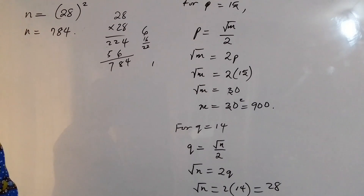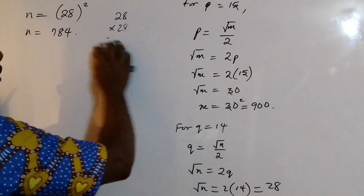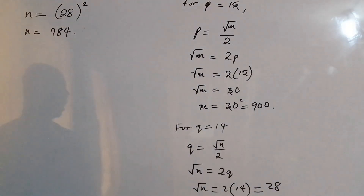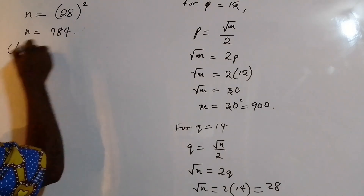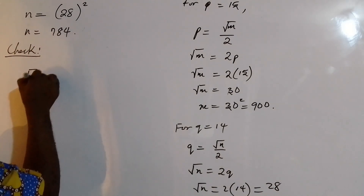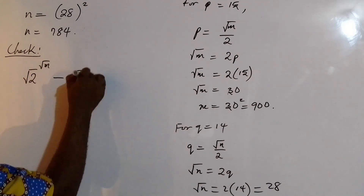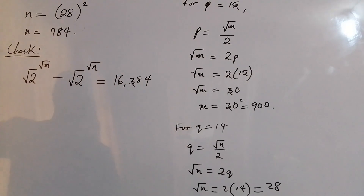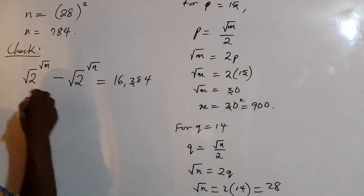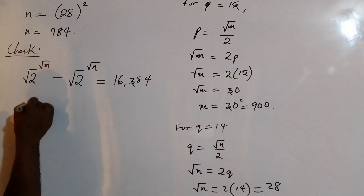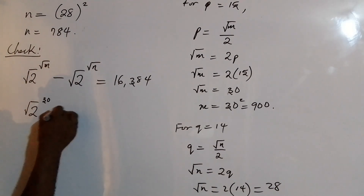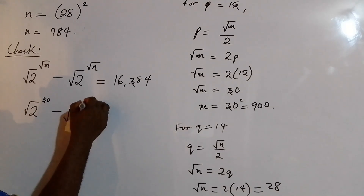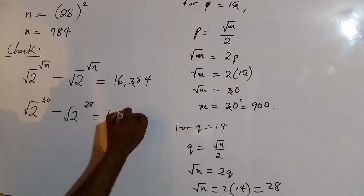So we have m equals 900 and n equals 784. Let's verify: the original equation is root 2 to the power of root m, minus root 2 to the power of root n, equals 16384. With root m equals 30 and root n equals 28, we get root 2 to the power of 30, minus root 2 to the power of 28.